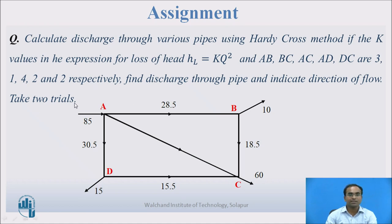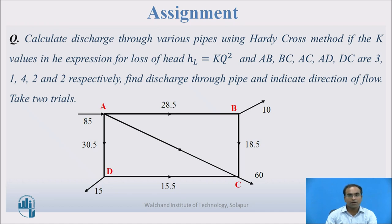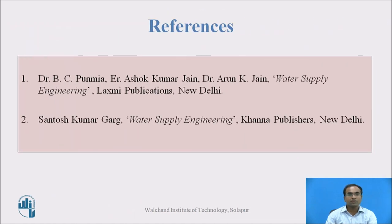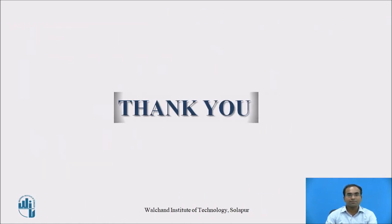There is an assignment problem involving a closed pipe network with two loops. The discharge values and the k values for each pipe are given, and Darcy's formula is used, so n = 2. You need to complete two trials to solve this network. Attempt the assignment after watching this video and share any difficulties. These are the references used. Thank you.